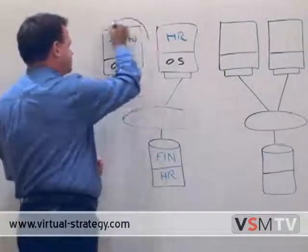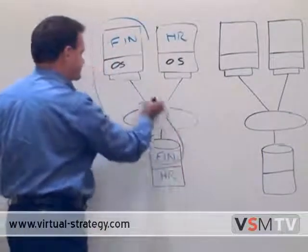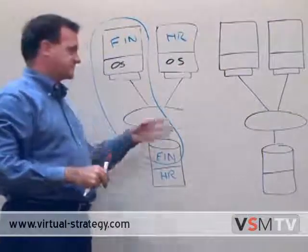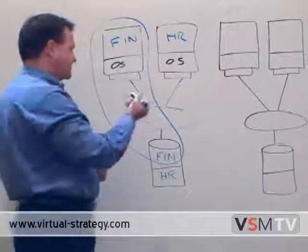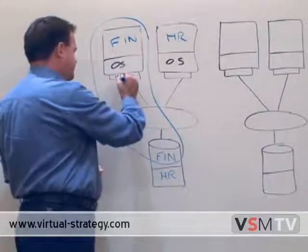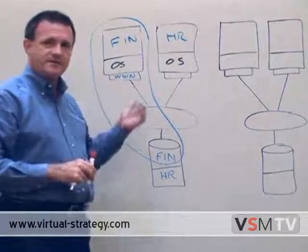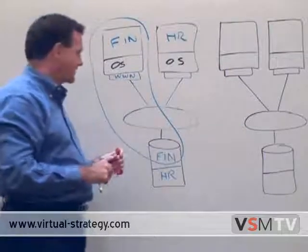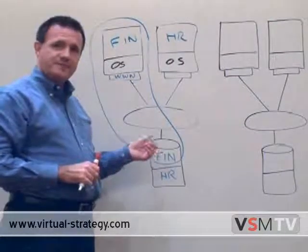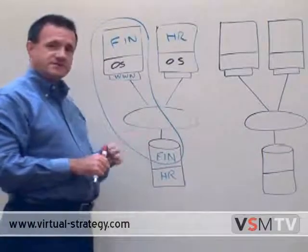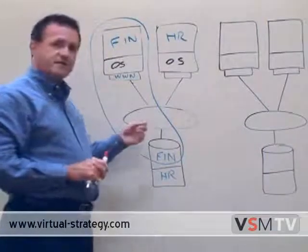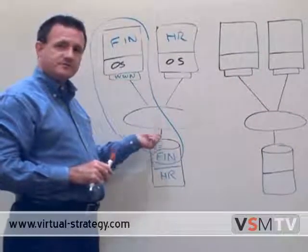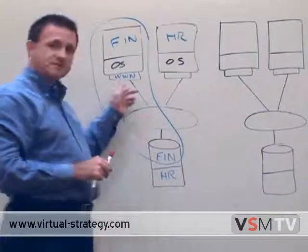You want to have your servers zoned in such a way that they can't get at some other server's storage. Typically, you'll have a zone for the finance application that includes its storage, zoned away from the HR application and its storage, so that the HR application cannot get at finance storage. The way you do that is by keying off the worldwide name on the HBA on that server. The worldwide name uniquely identifies that server in the SAN, and that's what we use to manage zoning. We also do things like array-level LUN mapping and LUN masking to make sure that the finance application can only see its own storage. You also probably have quality of service tools that manage I/O service through the SAN on behalf of that application, which also keys off the worldwide name.